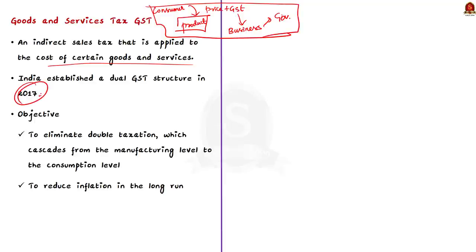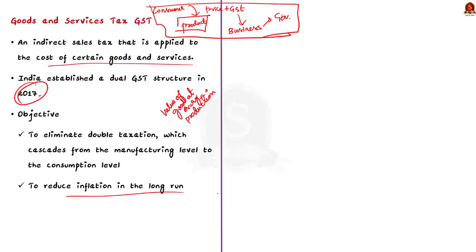The main objective of incorporating GST was to eliminate tax on tax, or double taxation, which cascades from the manufacturing level to the consumption level. Without GST, tax was paid on the value of goods and margin at every stage of the production process, translating to higher total taxes carried down to consumers as higher costs. The implementation of GST in India is therefore a measure used to reduce inflation in the long run by lowering the prices of goods.